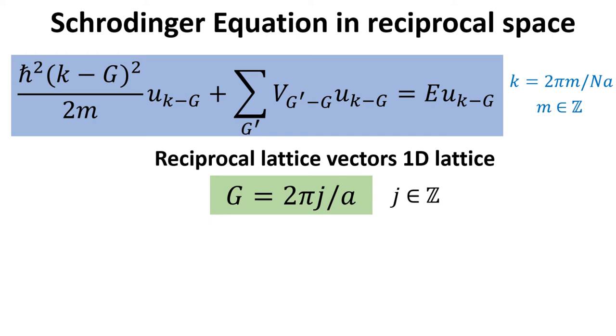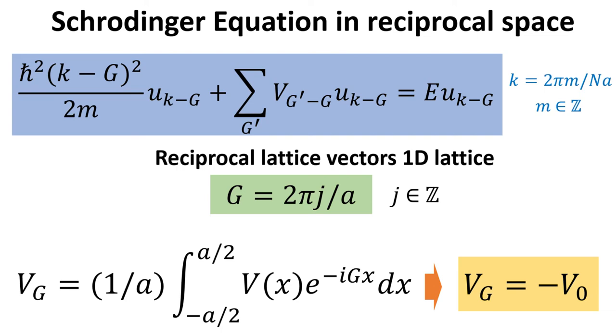Therefore, the Fourier components of the Kronig-Penney potential are independent of the reciprocal lattice vector indexes. Substituting the Fourier components into the Schrödinger equation, we obtain the central equation to the problem.